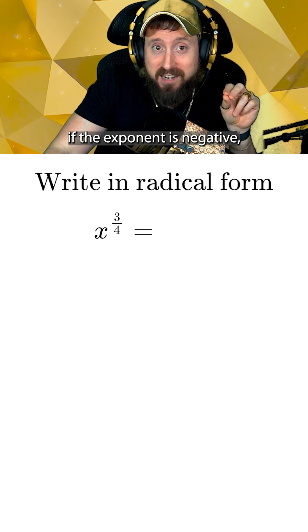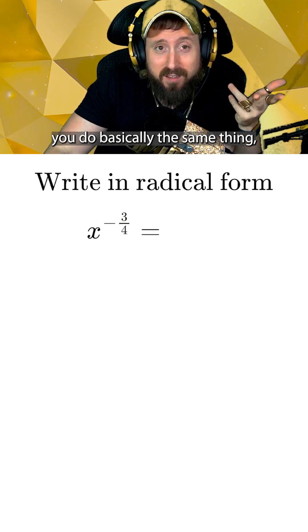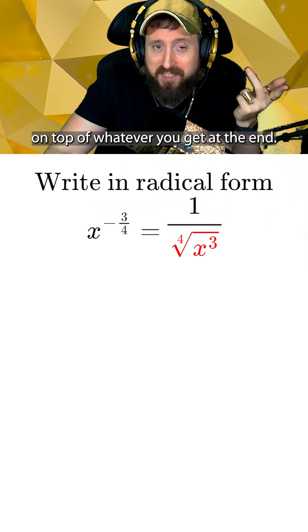Also remember, if the exponent is negative, you do basically the same thing, but slap a one divided by on top of whatever you get at the end.